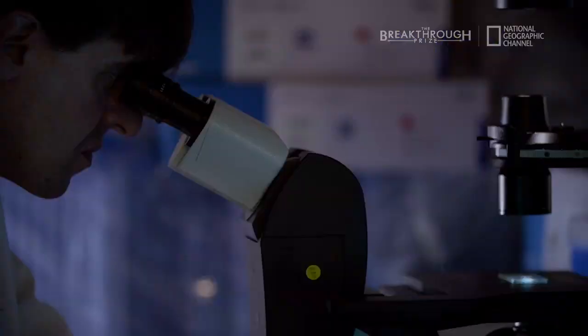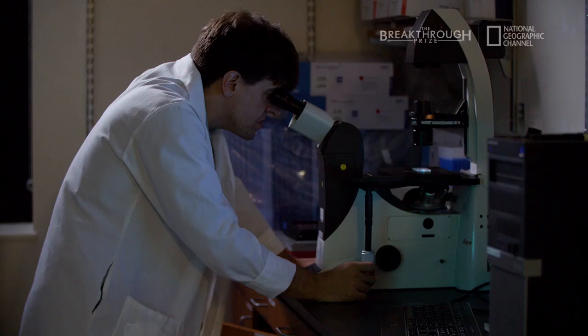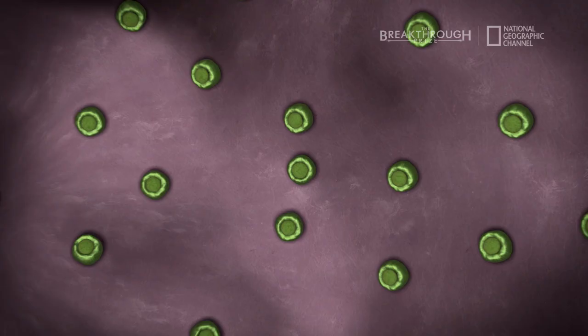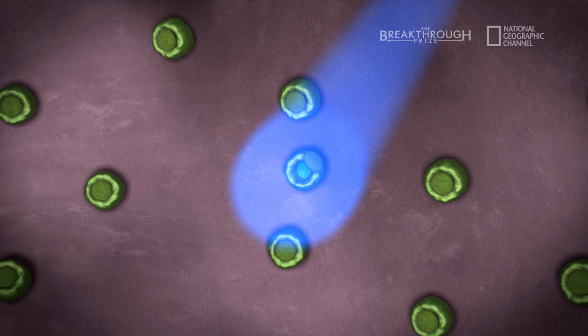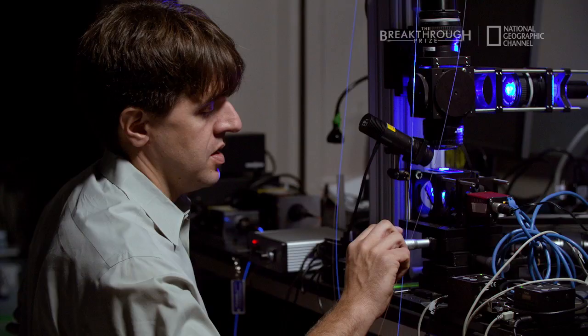Optogenetics is using light to control specific cells in the brain. The way that works is you take a gene that makes a protein that responds to light by producing electricity, and you put that into the cells that you want. Then when you flash light on those cells, you get electricity in those cells, and electricity is what neurons use to communicate.